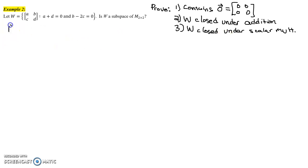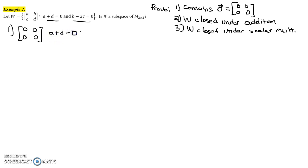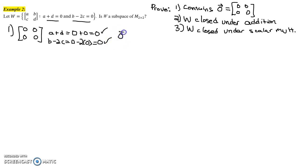First, does it contain the zero vector? Looking at the zero vector, A, B, C, D would all be zero. So we need to verify whether the two conditions are met. A plus D would be zero plus zero, which equals zero — so that first condition checks out. Also, B minus two times C would be zero minus two times zero, which also equals zero. So we've shown that yes, the zero vector is contained in W.